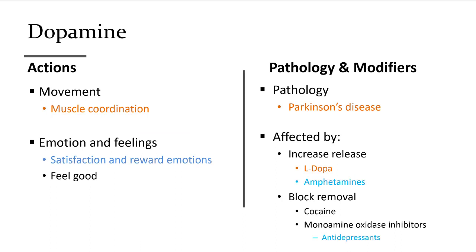Dopamine is involved in motor coordination, and its pathology is associated with Parkinson's disease. People with Parkinson's have tremors; the substantia nigra, part of the motor pathway, utilizes a lot of dopamine. When there isn't enough dopamine in that part of the brain, that is one of the problems associated with Parkinson's disease, which can be treated by giving the patient L-DOPA. Dopamine in other parts of the brain is another feel-good neurotransmitter — it makes us feel satisfied and provides a sense of reward and accomplishment. Amphetamines also increase dopamine, and cocaine and MAOI inhibitors block its removal, increasing its effectiveness.